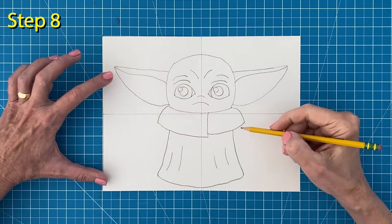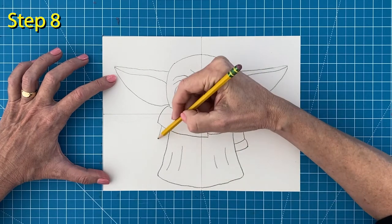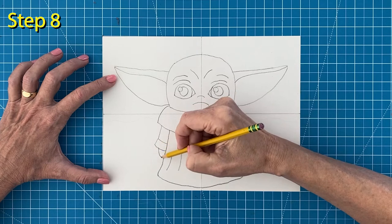Step number eight, add the two matching sleeves below the collar with two simple hands. Finish with a horizon line.